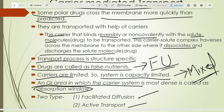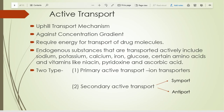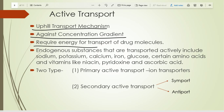Carrier-mediated transport is divided into two types: facilitated diffusion and active transport. In facilitated diffusion, the drug moves from high concentration to low concentration with the help of carriers. In active transport, the drug moves from low concentration to high concentration with the help of carriers — it is also called uphill transport, against the concentration gradient — and energy is required for this movement.